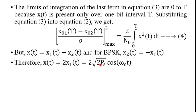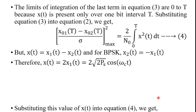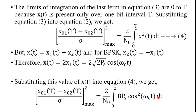Since x1(t) = √(2Ps) cos(ωct), substituting into the expression gives x(t) = 2√(2Ps) cos(ωct), where ωc is the angular carrier frequency and Ps is the power of the signal. Substituting this x(t) value into equation 4, we get x²(t) = 4 · 2Ps cos²(ωct) = 8Ps cos²(ωct), giving the signal-to-noise ratio term.